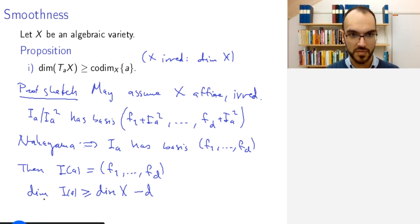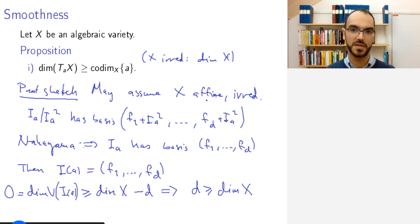But we also know that the dimension of the vanishing set of this ideal, this has dimension zero because A is a point. So this implies that D is greater than or equal to the dimension of X in our irreducible case.